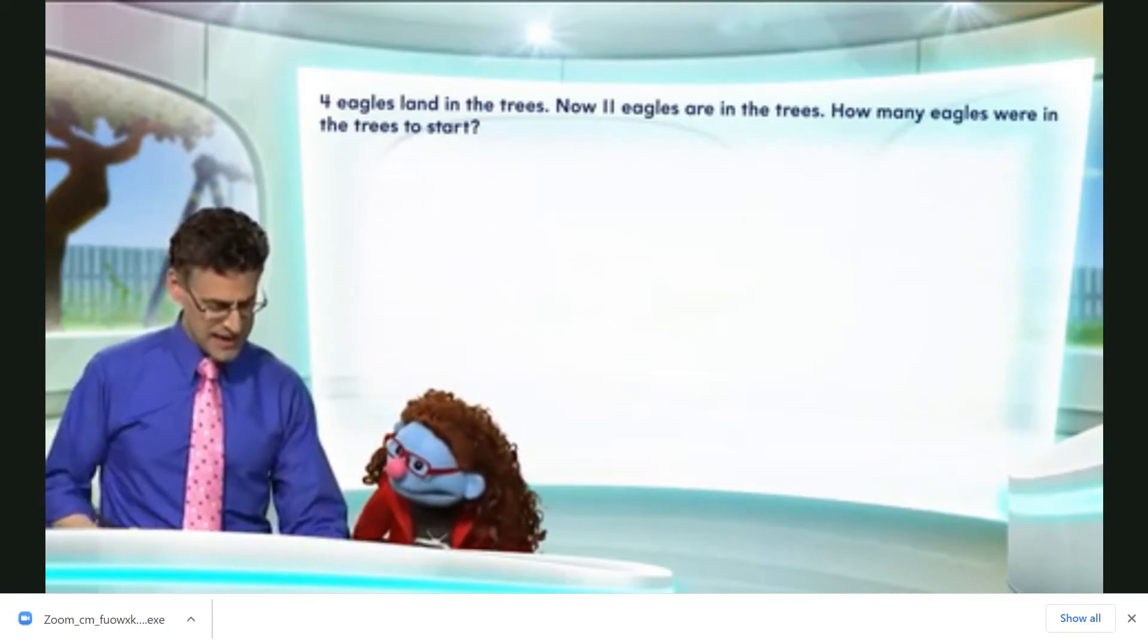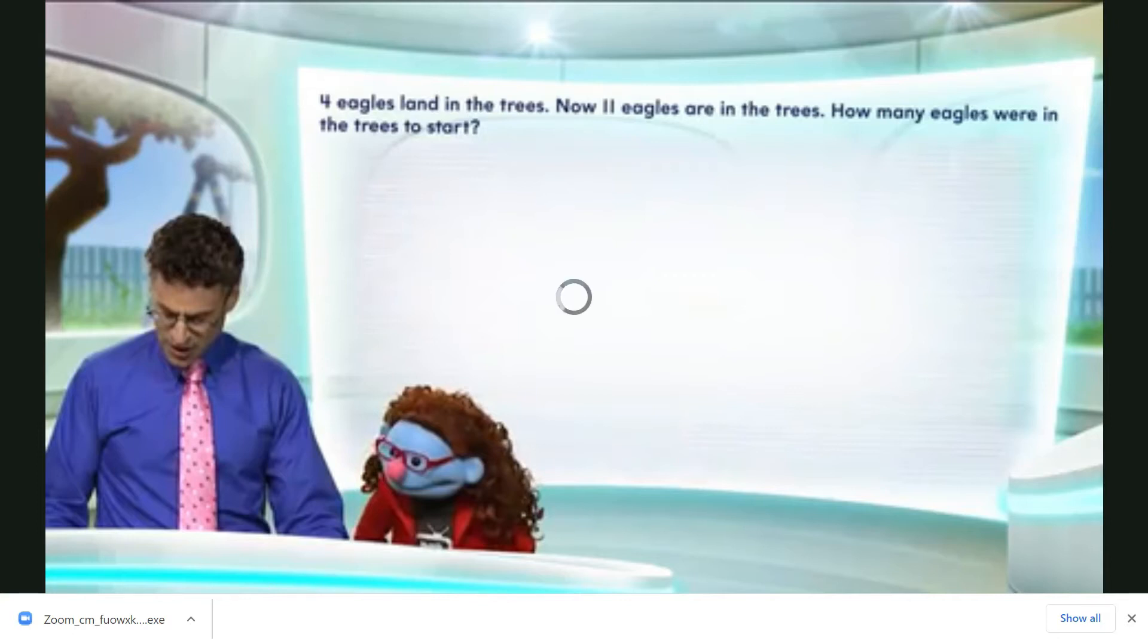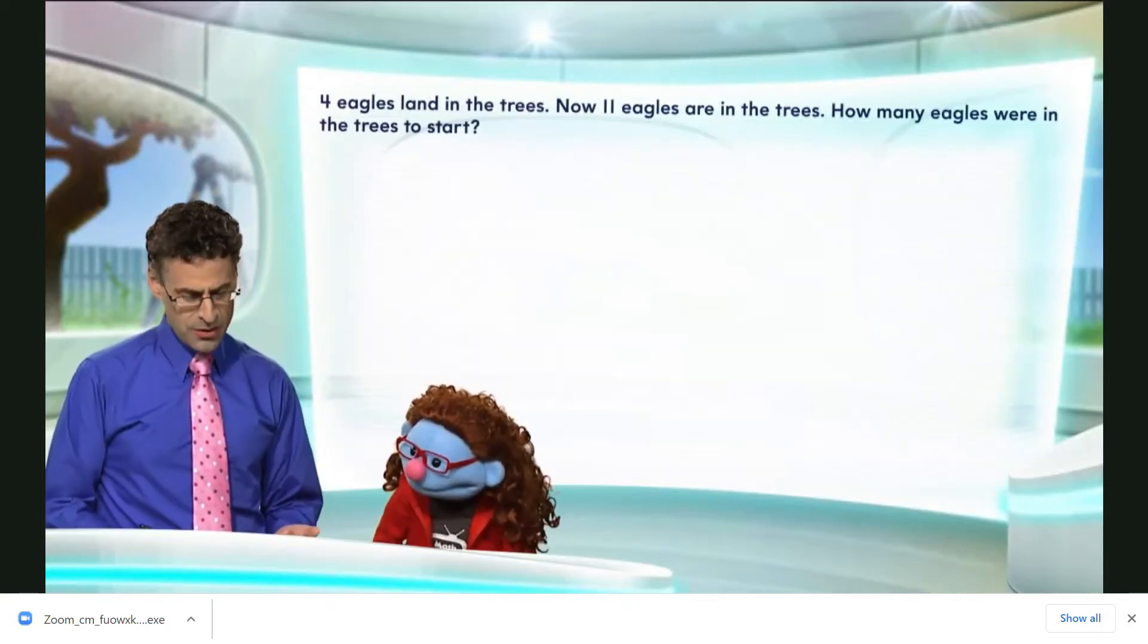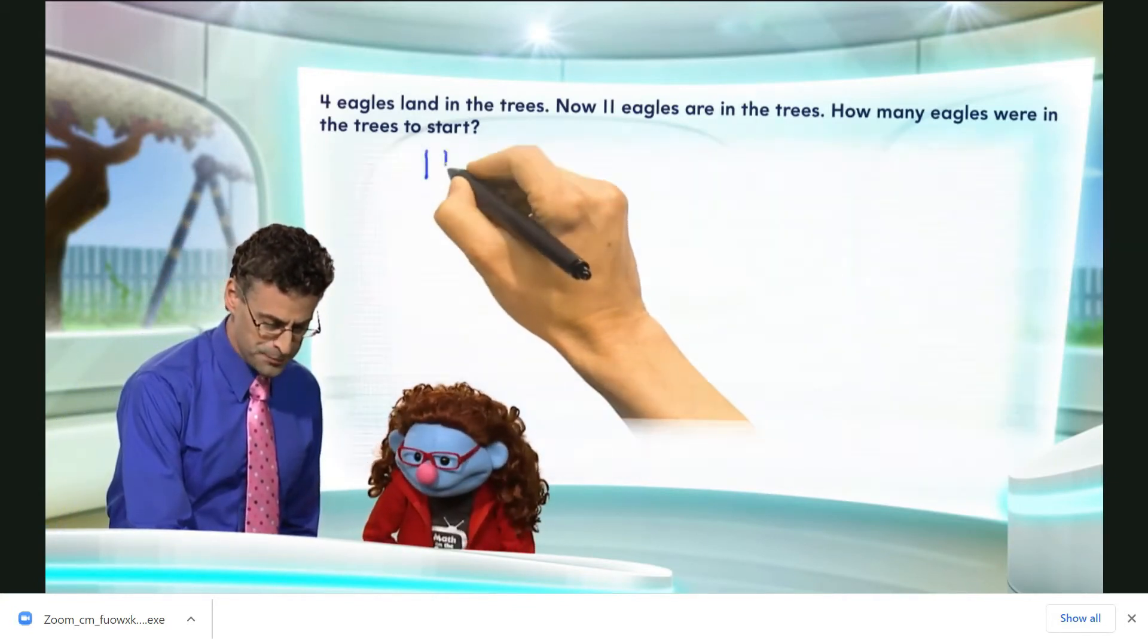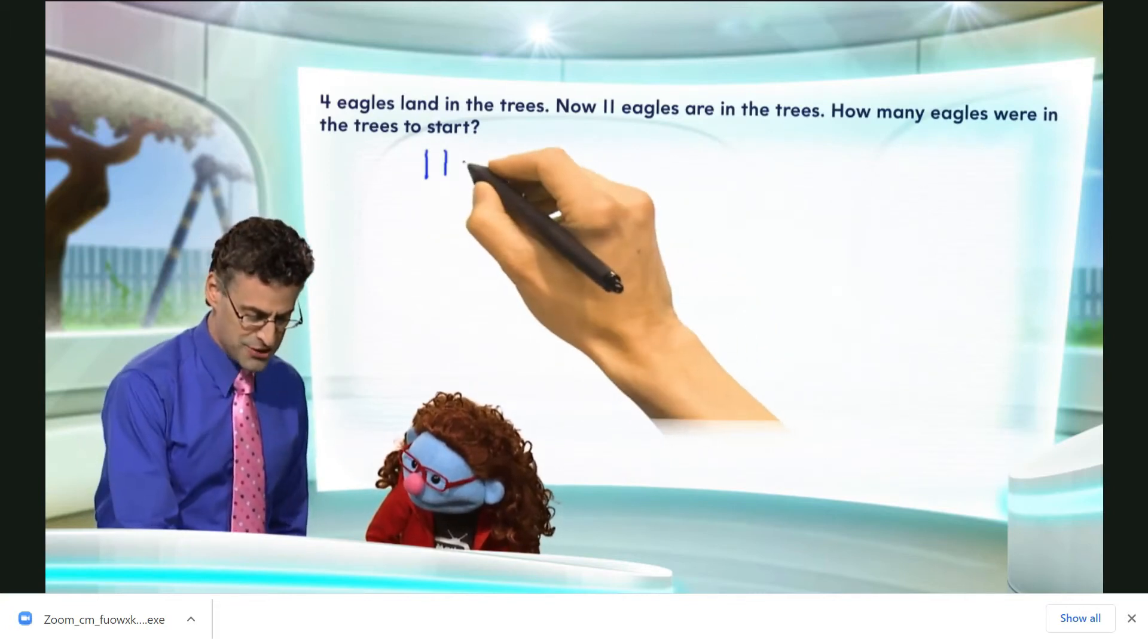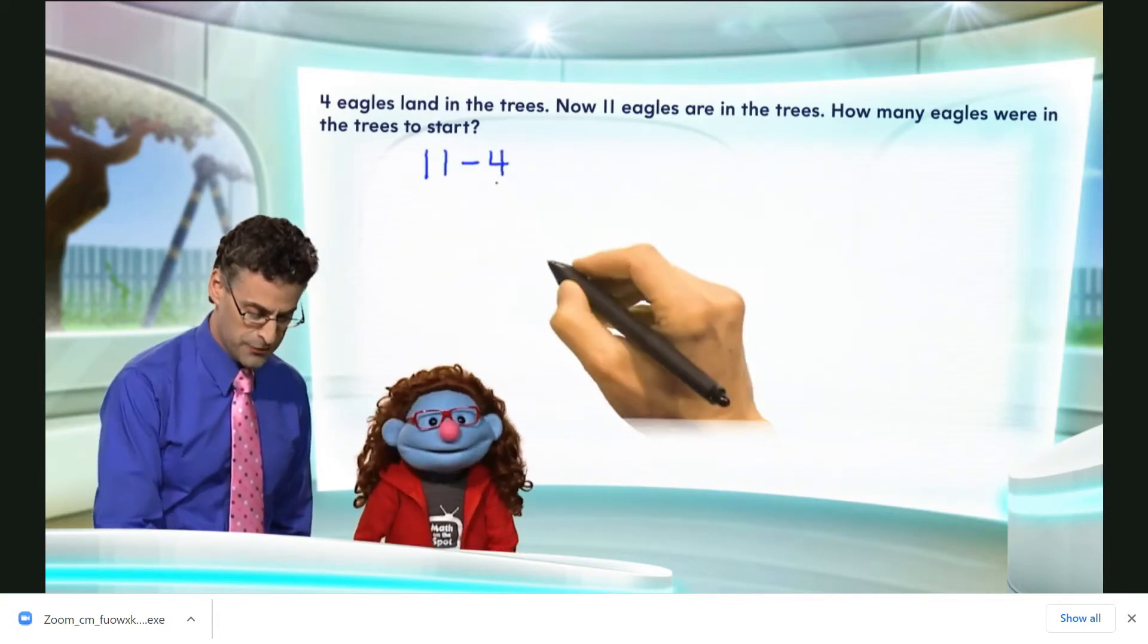Let's think about how we'd write this as a math sentence. So we know that we have 11 eagles now, and we knew that four landed. So if we had 11 eagles now, and we knew that four had just landed, if I remove those four, so if I subtract the four.